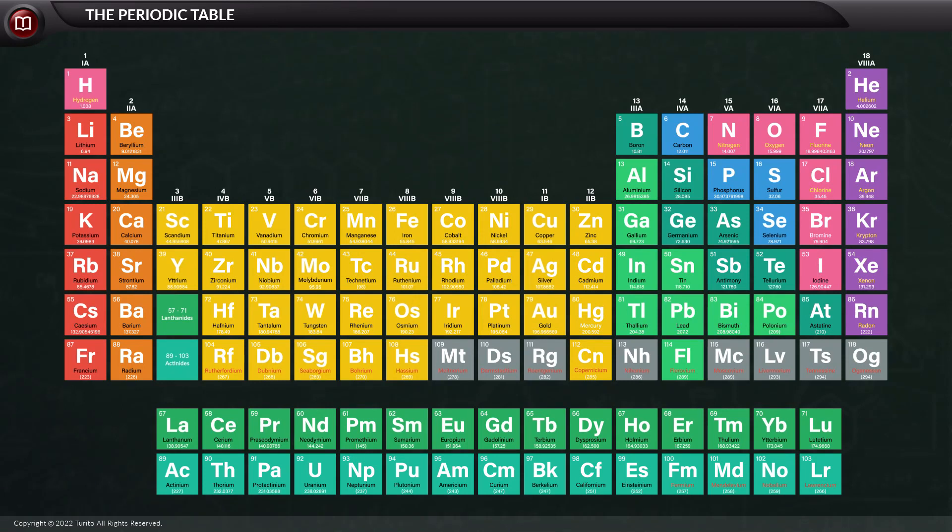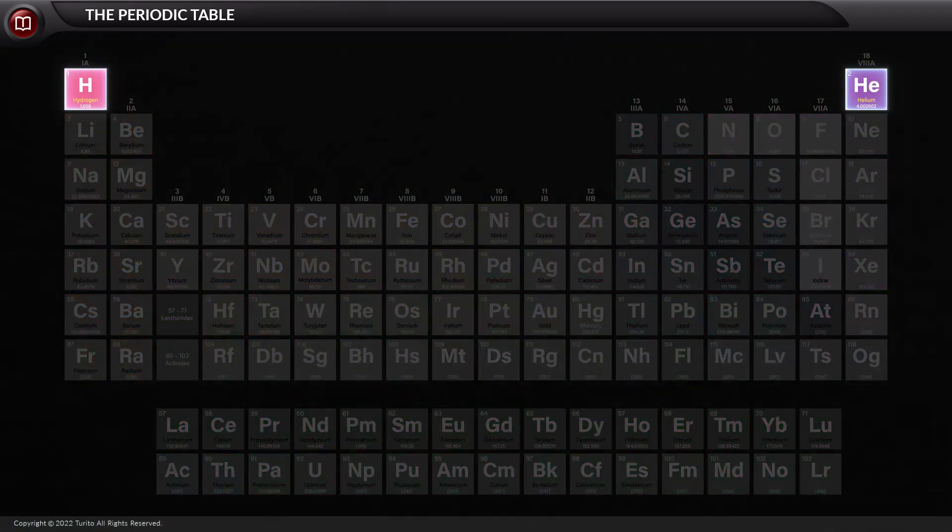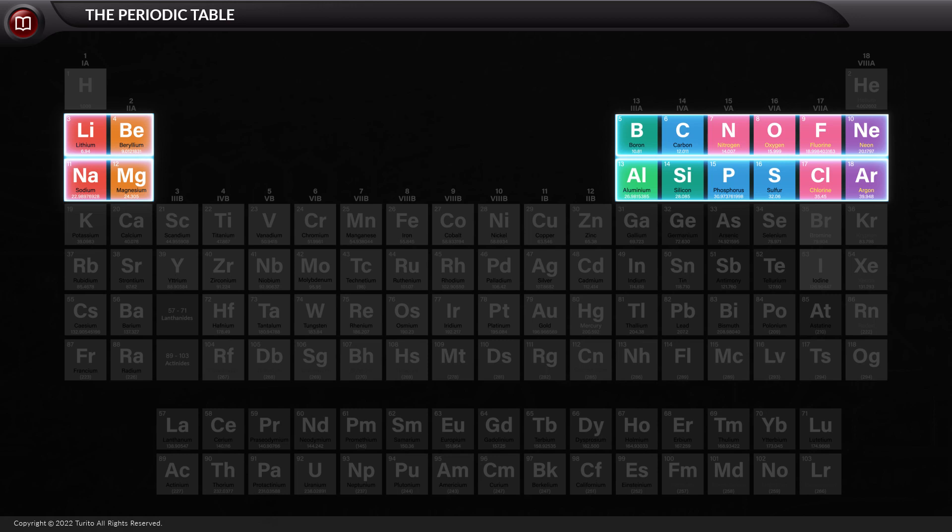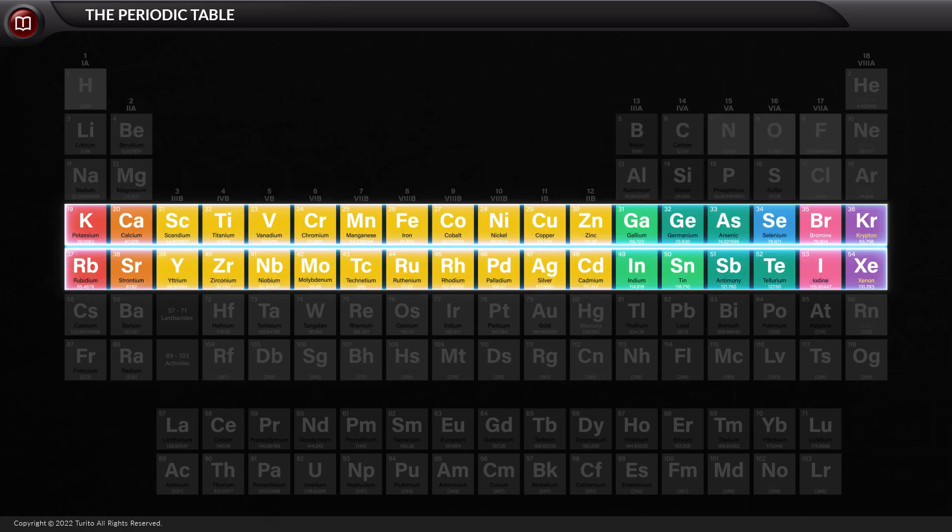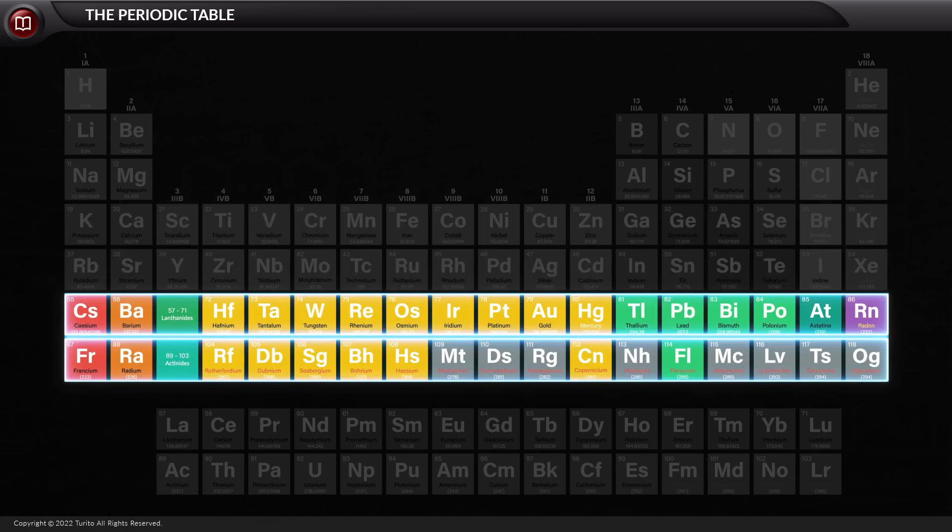As you can see, the first period has 2 elements. The second and the third period have 8 elements each. The fourth and fifth periods have 18 elements each. The sixth and seventh periods have 32 elements each.